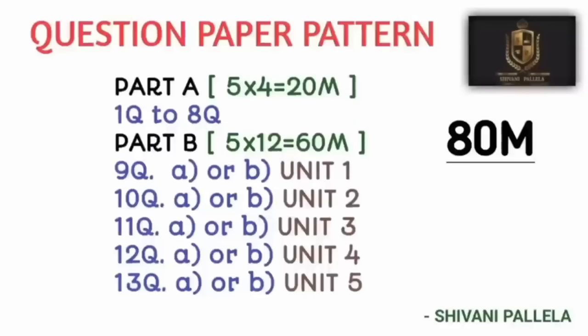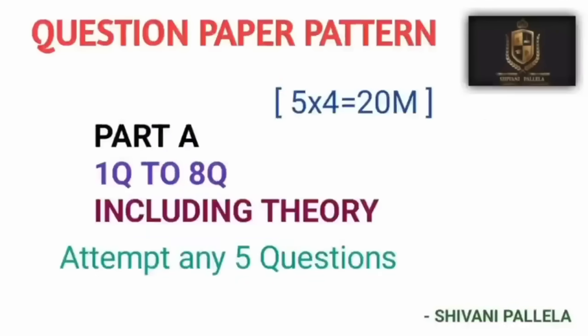In Part A, you need to attempt five questions, each carrying four marks. In Part B, you need to attempt five questions, each carrying 12 marks. In each question you will have an internal choice. For example, question nine is from Unit 1, question ten from Unit 2, and so on.